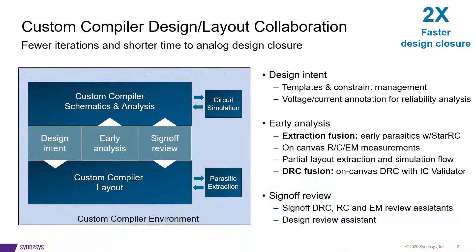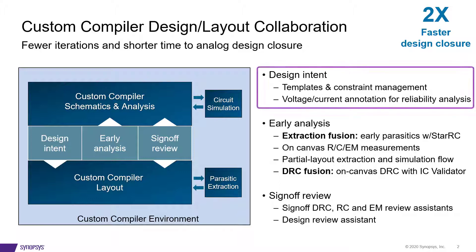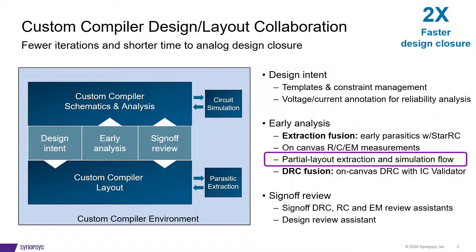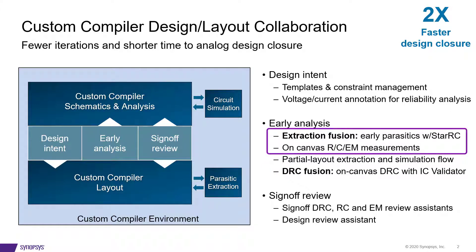In our last video, we talked about reducing design iterations with effective design intent and partial layout extraction and simulation flow. Now let's talk about in-design analysis, on-canvas R, C, and EM measurements, and why it is critical to use sign-off engines to check and fix electro-migration issues during layout. Please go ahead, Kai.